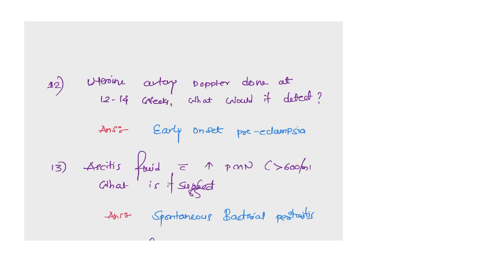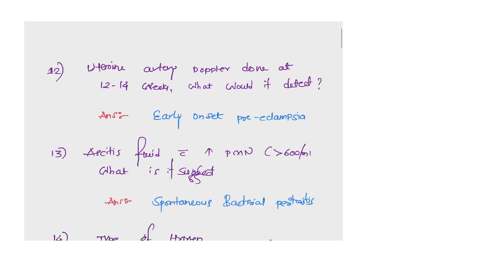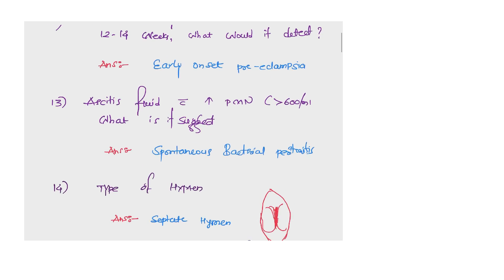This is all about image-based questions. Now let's talk about the theory questions. You must have seen that radiology and OB-GYN were heavily featured in today's paper, right? Our next question is: uterine artery Doppler done at 12 to 14 weeks, what would it detect? The answer is early-onset preeclampsia.